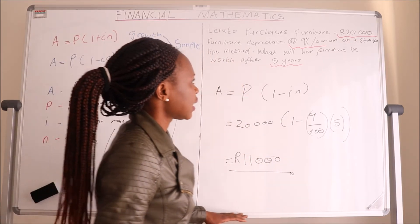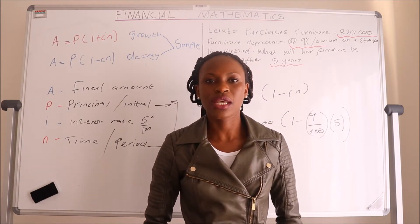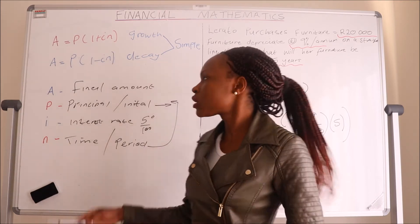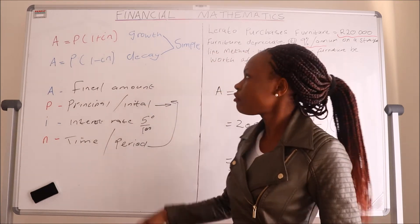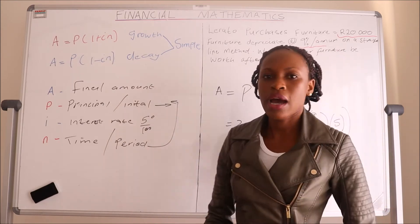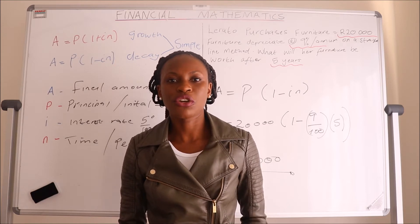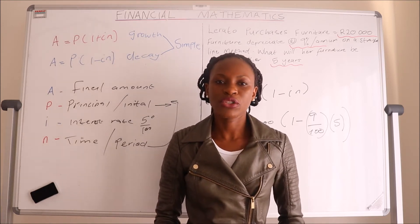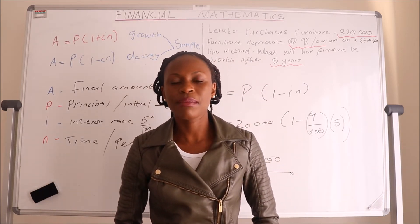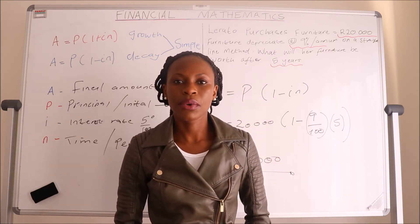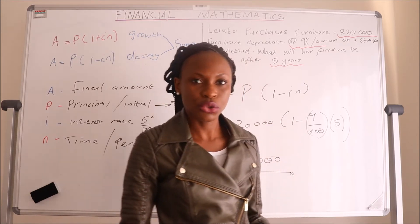I hope you understand that there's a difference between depreciating and appreciating values. When values depreciate, you use the simple decay equation. When a value appreciates, you use the simple growth method, because after a certain period the value of the goods will be worth more than the original amount. Unlike Lerato's furniture, which is worth less than the original amount she paid.